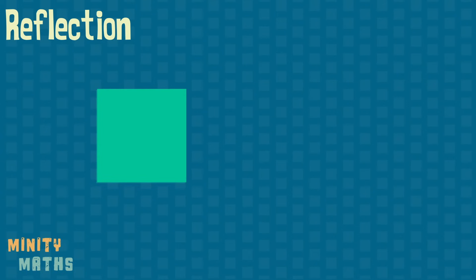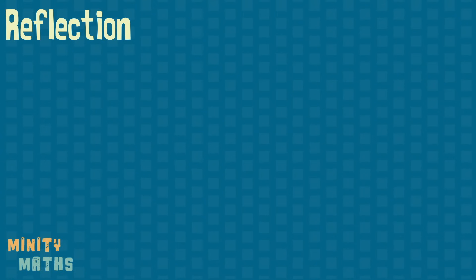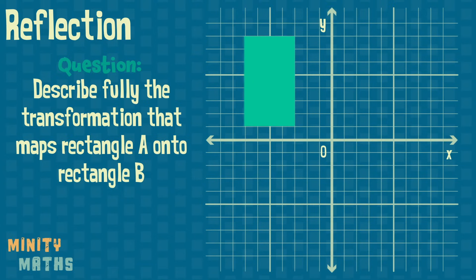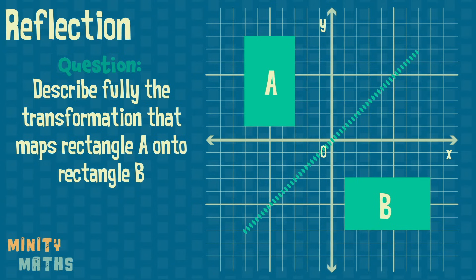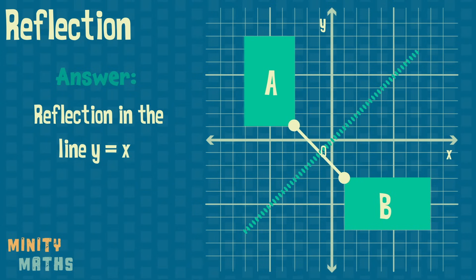Reflection changes the shape's position. Reflection of a shape can be described using only one detail: the equation of the line of reflection. It can help to think of this line as a mirror. Each vertex of the new shape will be an equal distance from the mirror line as each vertex of the original shape.